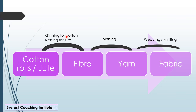Cotton uses the ginning process and jute uses retting. We discussed the ginning process — combing is used manually and machines are used. For retting of jute, we have jute stems soaked in water for a few days. Then, by hand, we remove the fiber.